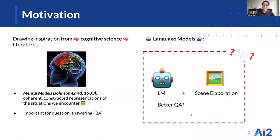In cognitive science, it has long been promoted that the formation of mental models is central to understanding and question answering, where mental models are coherent, constructed representations of the situations we encounter.